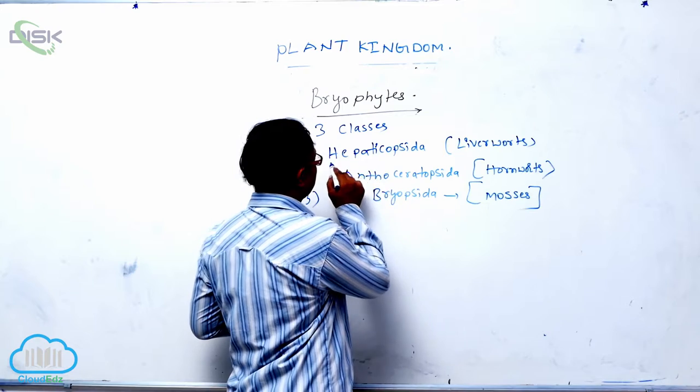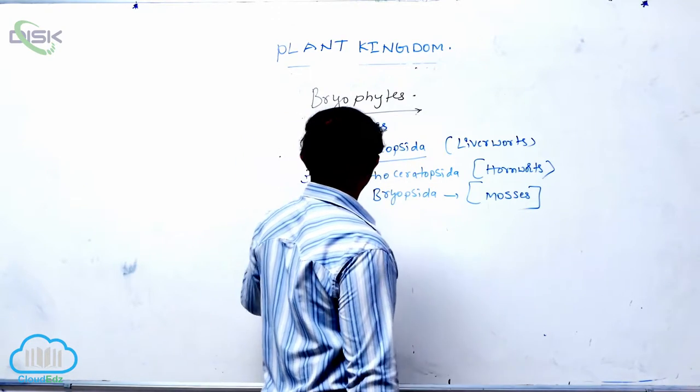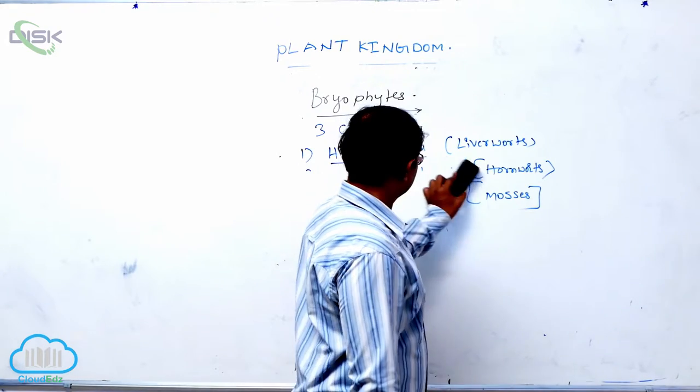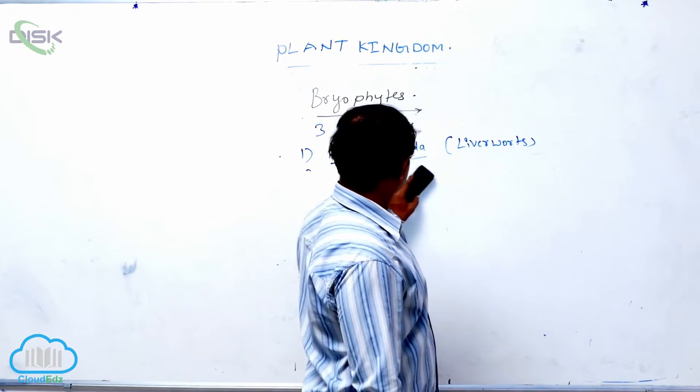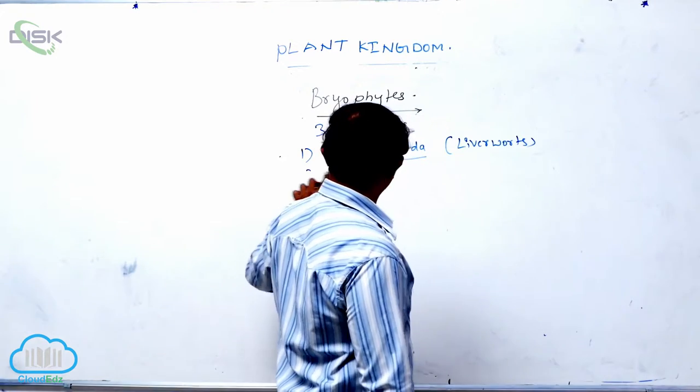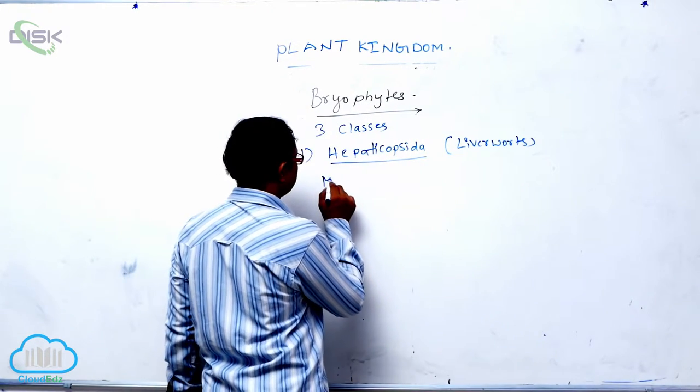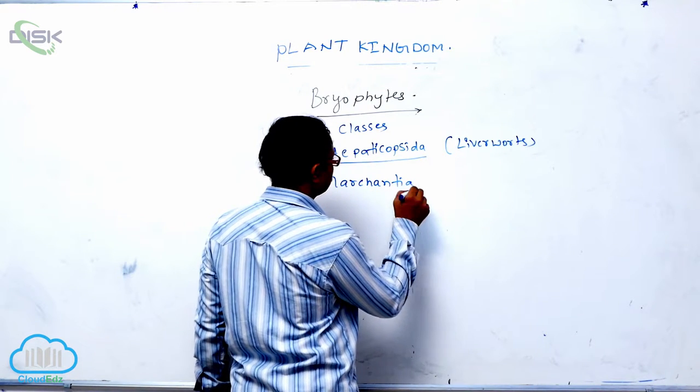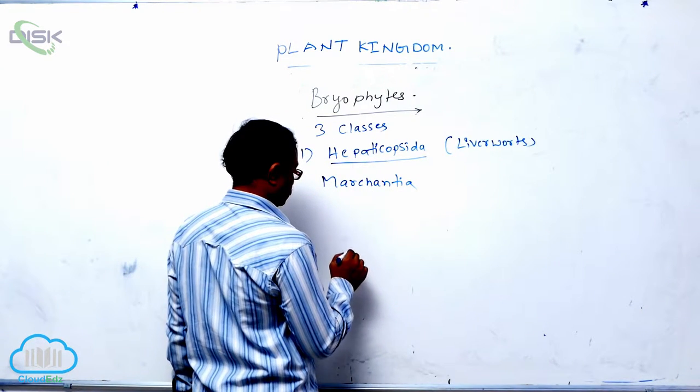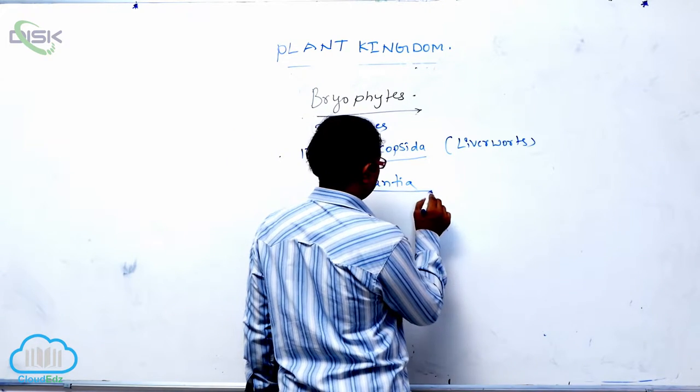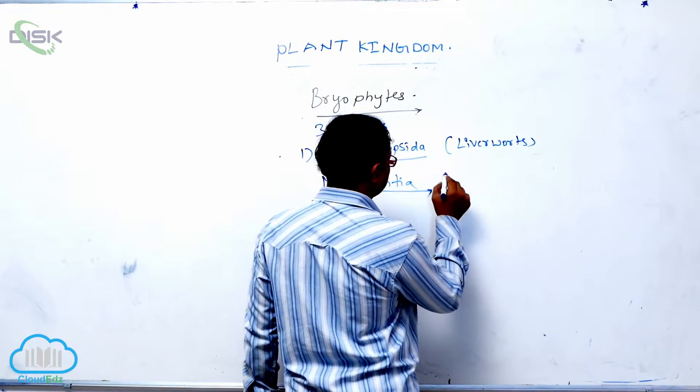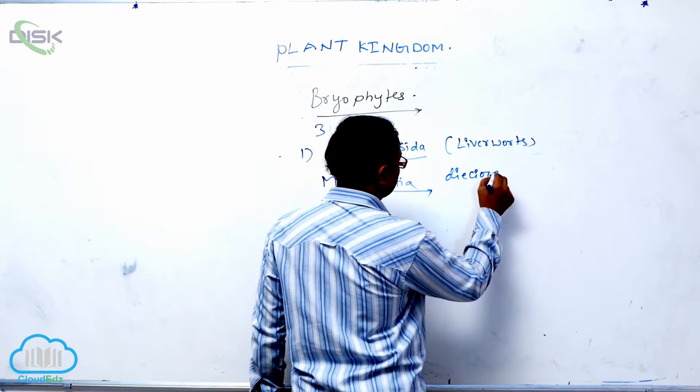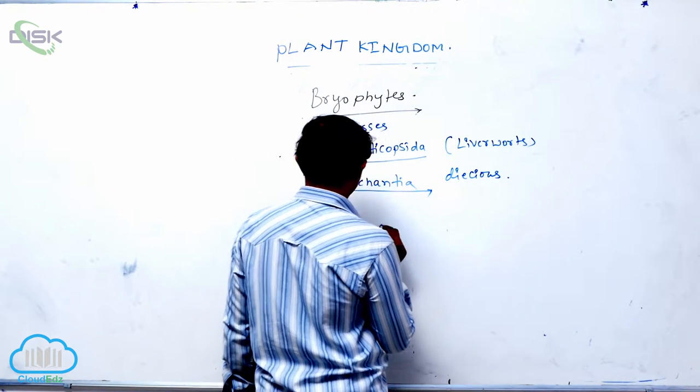First we will discuss Hepaticopsida, liverworts. Generally, liverworts example is Marchantia. Generally they are dioecious, it means male plant and female plant.